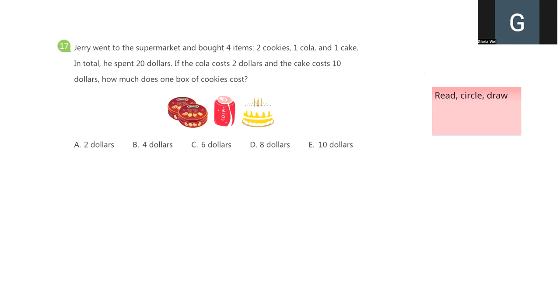We already know Jerry bought 4 items. In total, he spent $20. One cola cost $2 and the cake cost $10. The question is asking us, how much does one box of cookies cost?